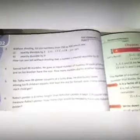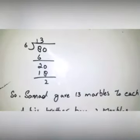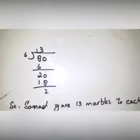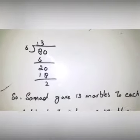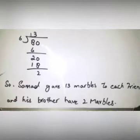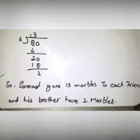Question number four: Samad had 80 marbles. He gave an equal number of marbles to each of his six friends and let his brother have the rest. How many marbles did his brother receive? To solve this, you divide 80 by 6. The answer is 13 and the remainder is 2. So Samad gave 13 marbles to each friend and his brother received 2 marbles.